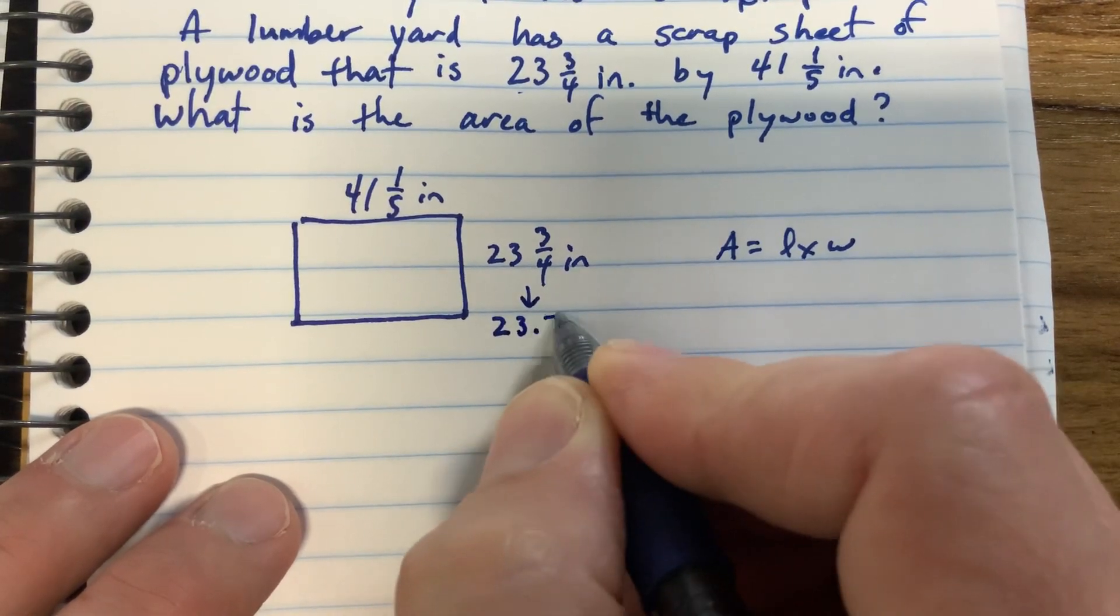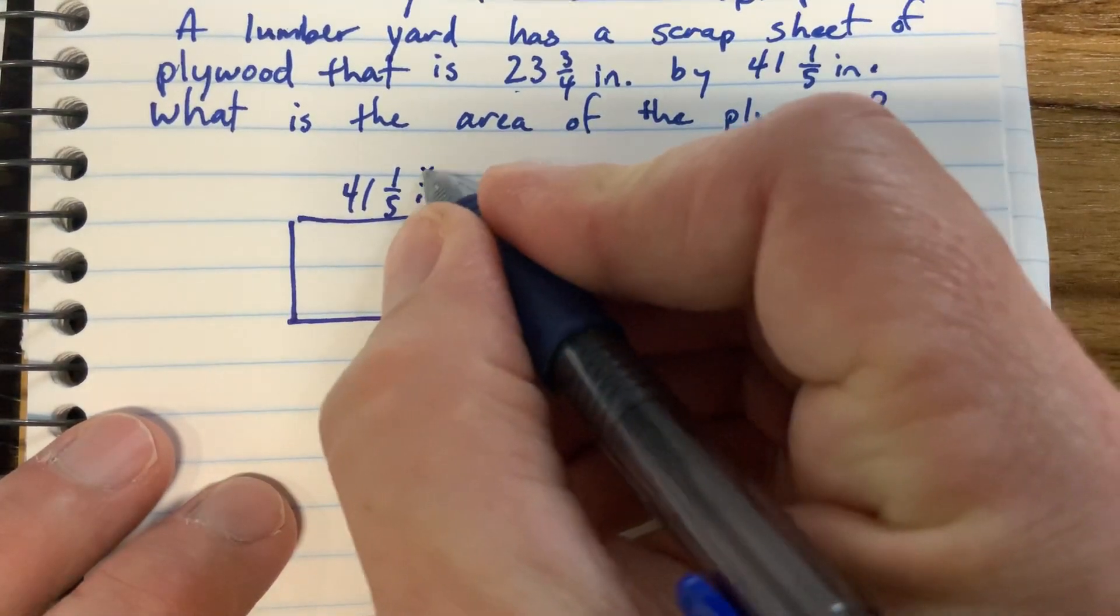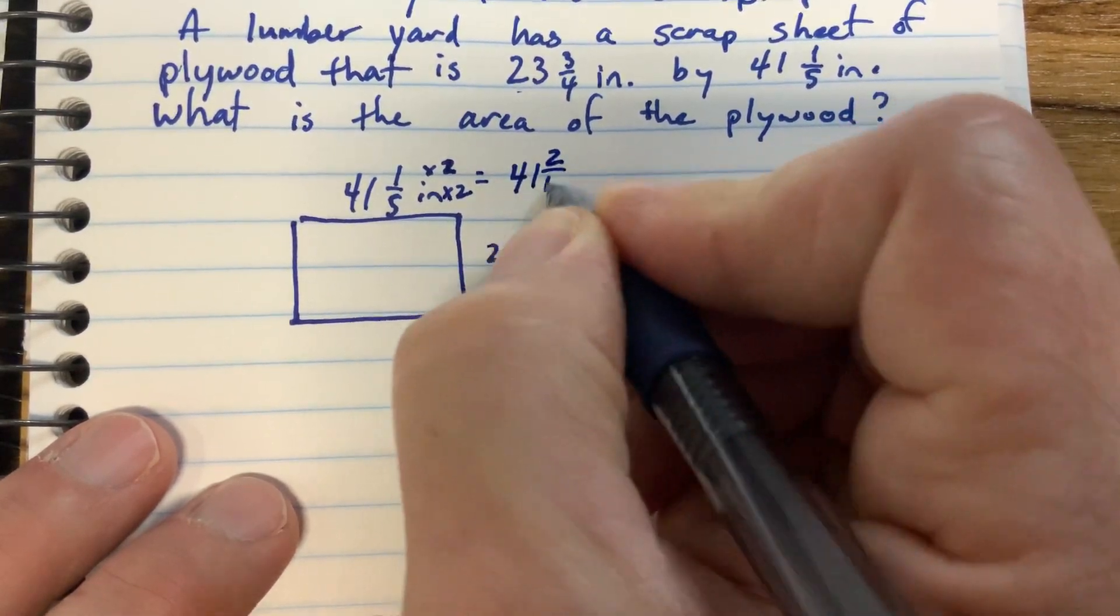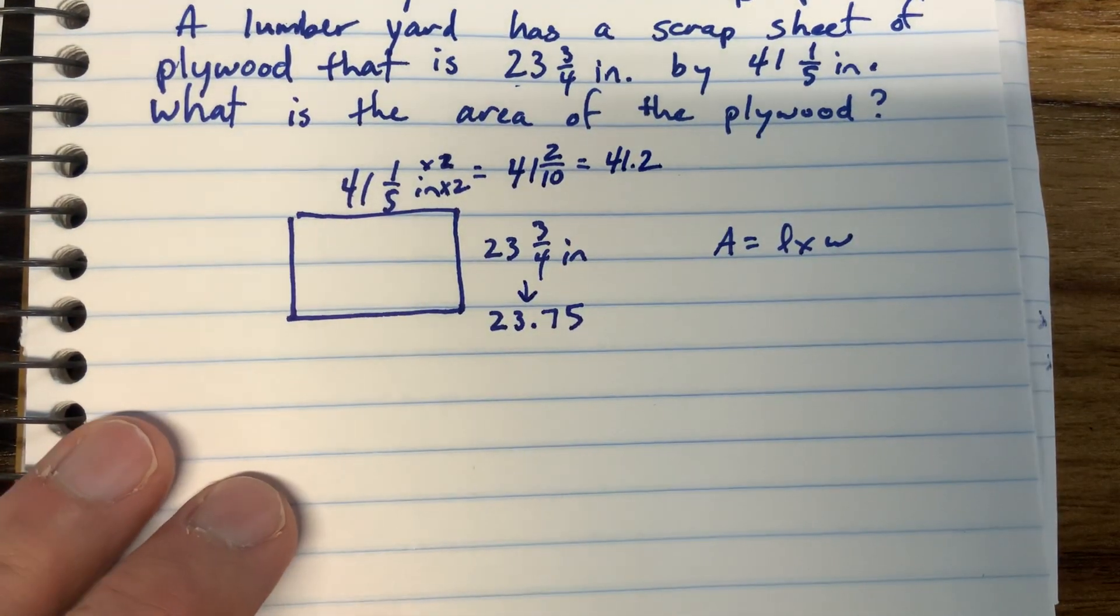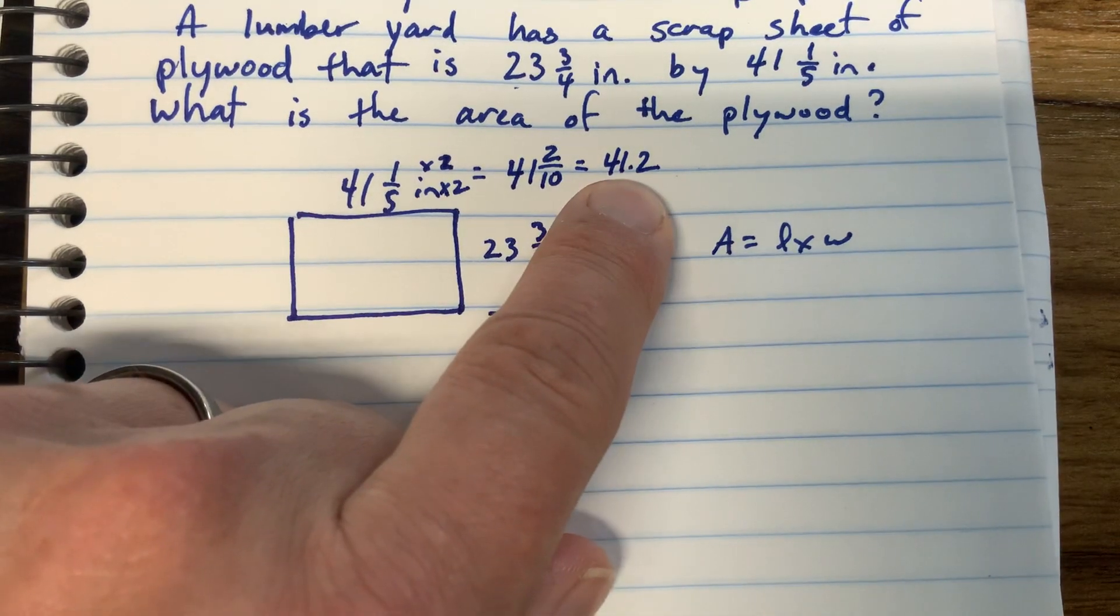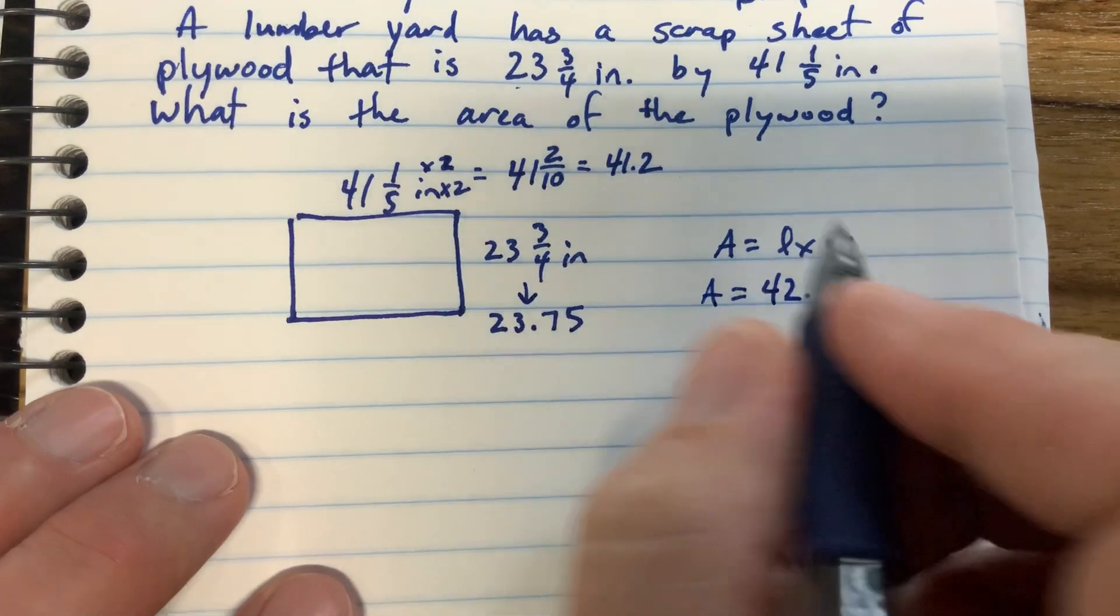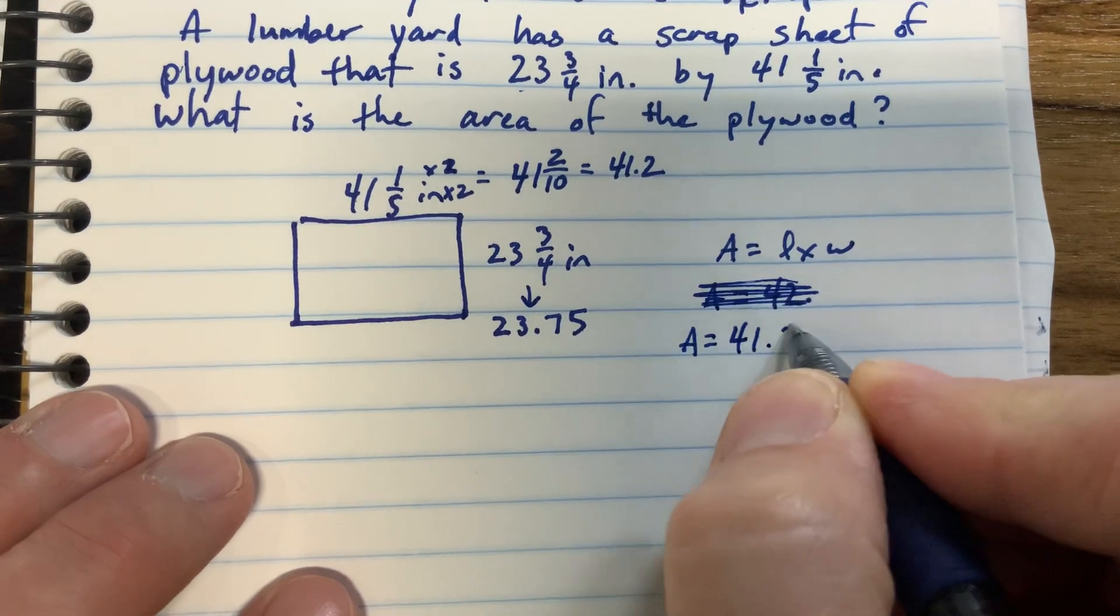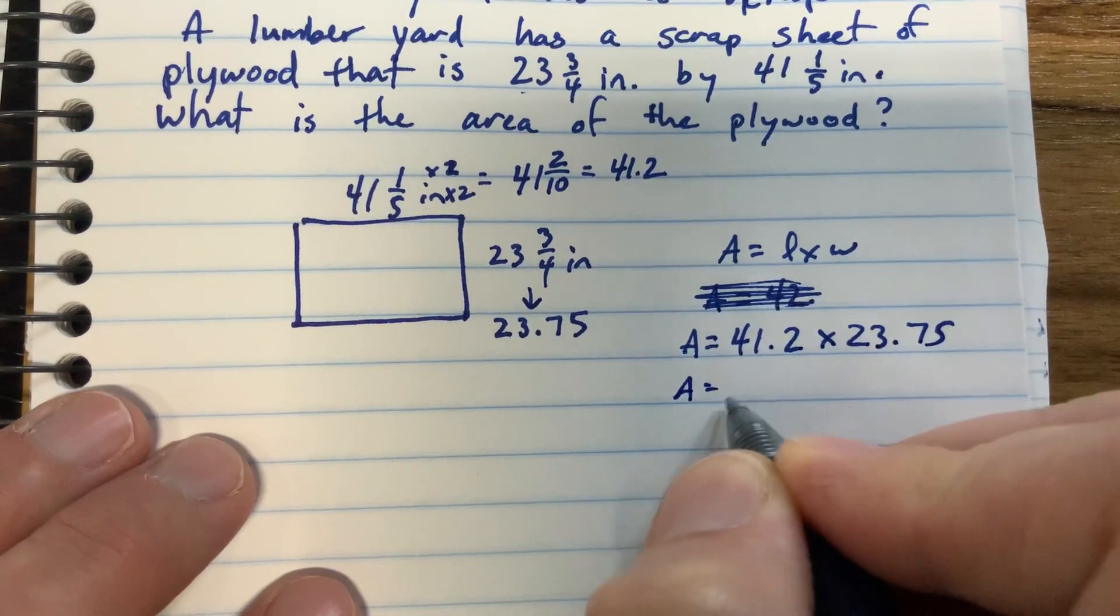So 23 and three-fourths could be written as 23 and 75 hundredths, or 23.75. 41 and one-fifth, times both the numerator by two and the denominator by two, we get 41 and two-tenths, or 41.2. So now I have a width of 23.75 and a length of 41.2. I can multiply those two together and get the area. I messed up on that - area equals 41.2 times 23.75, so there's the area.